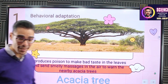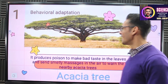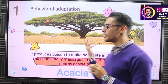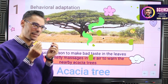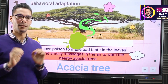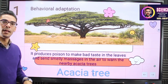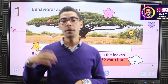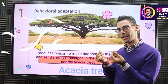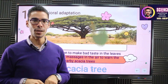Do they also have behavioral adaptation? The answer is yes. They produce a kind of poison — a toxic material — that makes their leaves have a bad taste. So the giraffe or other animals that come to eat the leaves feel that it tastes bad and leave. Also, they send smelly chemical messages to warn nearby acacia trees. If a giraffe is coming, the tree produces poison and sends a message to its neighboring trees: 'Be careful, the giraffe is coming — produce poison.'